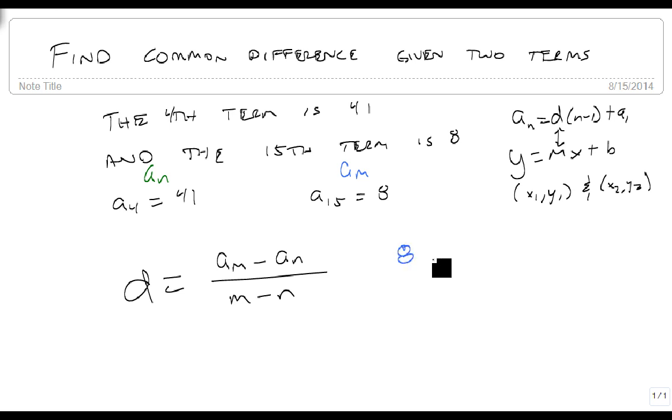For this particular problem we get 8 minus 41, the outputs, divided by the inputs 15 minus 4.